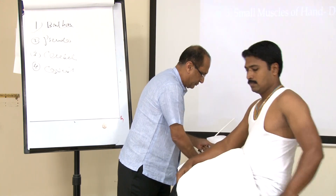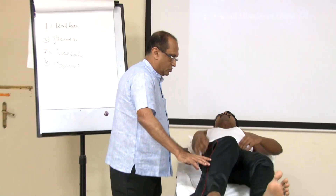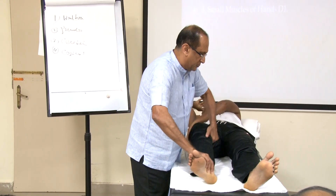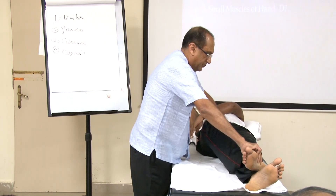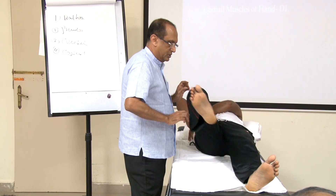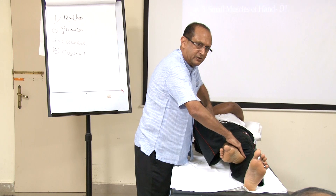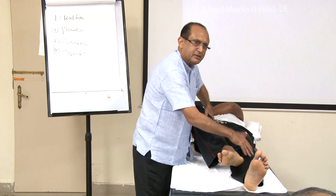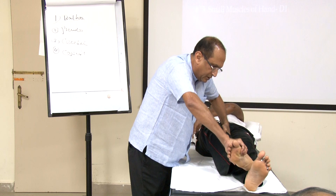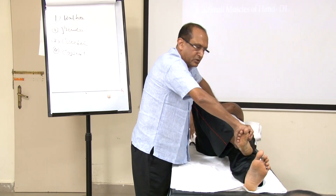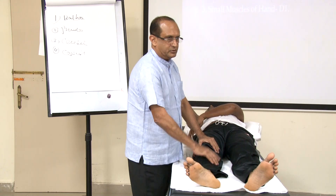Then do the heel-knee-shin test. Be very careful — you should instruct the patient to place the heel on the knee, rub it down the shin, lift off, and come back to the tibial tubercle again. Do not allow the patient to rub it up and down on the tibia, as using the tibia as a fulcrum gives a false negative result.